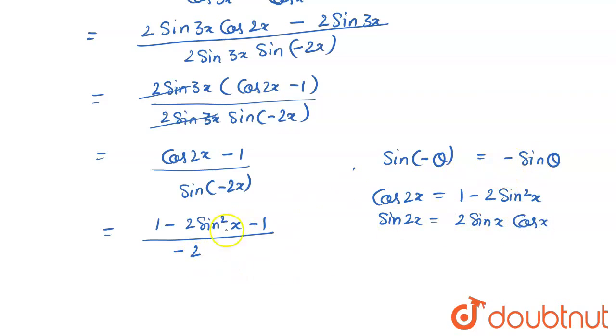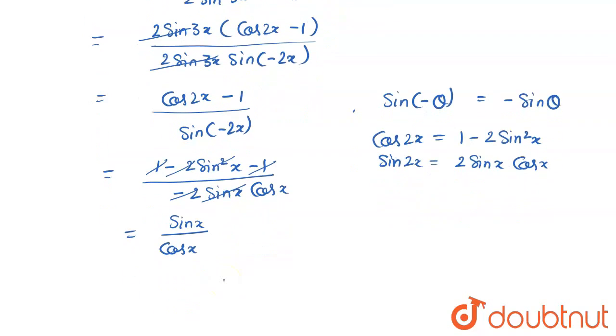I have already taken the minus outside so it becomes sin 2x becomes 2 sin x cos x. 1 minus 1 cancels out, this minus 2 and minus 2 will cancel out. I can also cancel sin x and I am left with sin x divided by cos x and that is nothing but tan x which is our right hand side. So we have proven the given question. Thank you for watching the video.